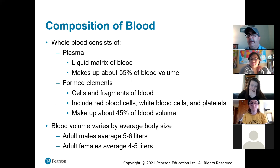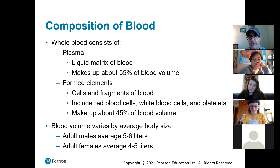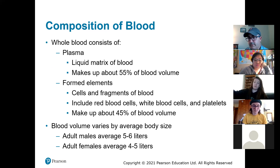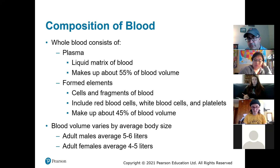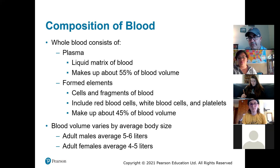You can take the blood and split it into two groups: plasma and formed elements. The plasma is always the liquid part — everything dissolved in the liquid. The formed elements are the solids — the cells and cell fragments: red blood cells, white blood cells, and platelets. Platelets are cell fragments involved in blood clotting. Just over half of your blood volume is plasma, and just under half is solids. Blood volume varies by age and body size; males average a little bit more blood than females, just because of body size.